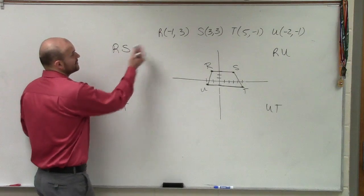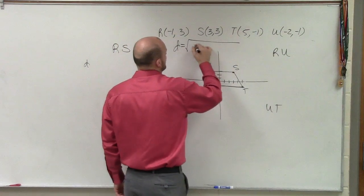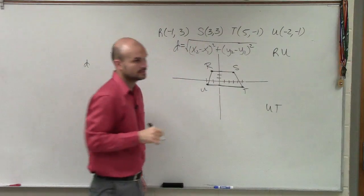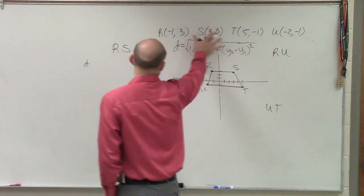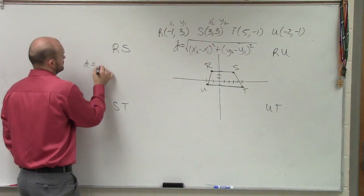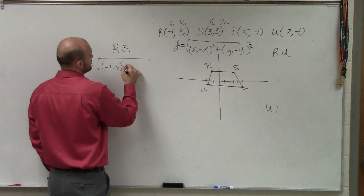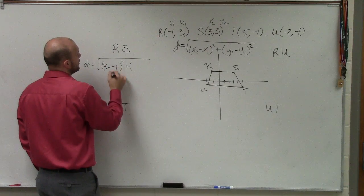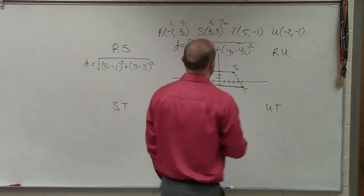So we got a lot of work to do. So if I do RS, remember we have the distance. So remember, we wrote the distance as the square root of x2 minus x1 squared plus y2 minus y1 squared. That was part of our distance formula. So now, if I do R and S, I'll do 3 minus a negative 1 and then 3 minus 3 squared.